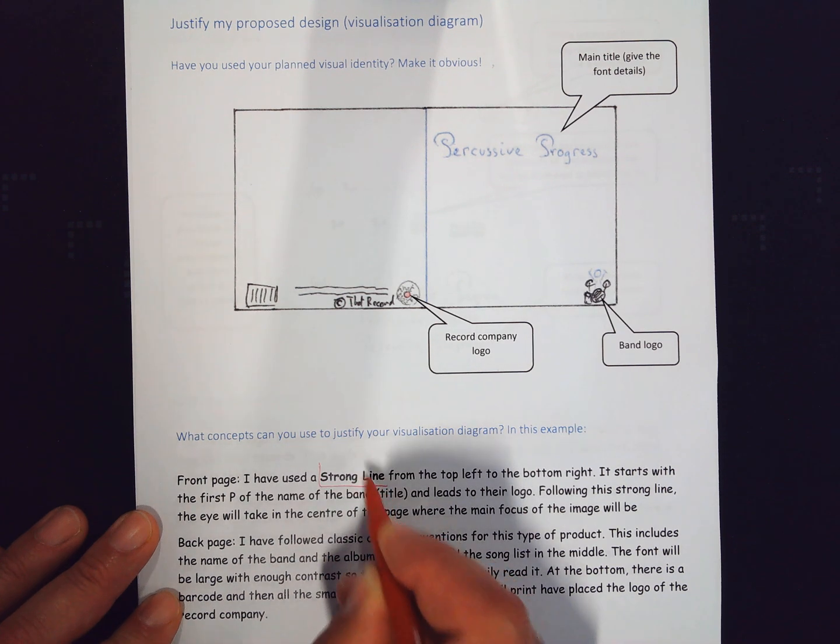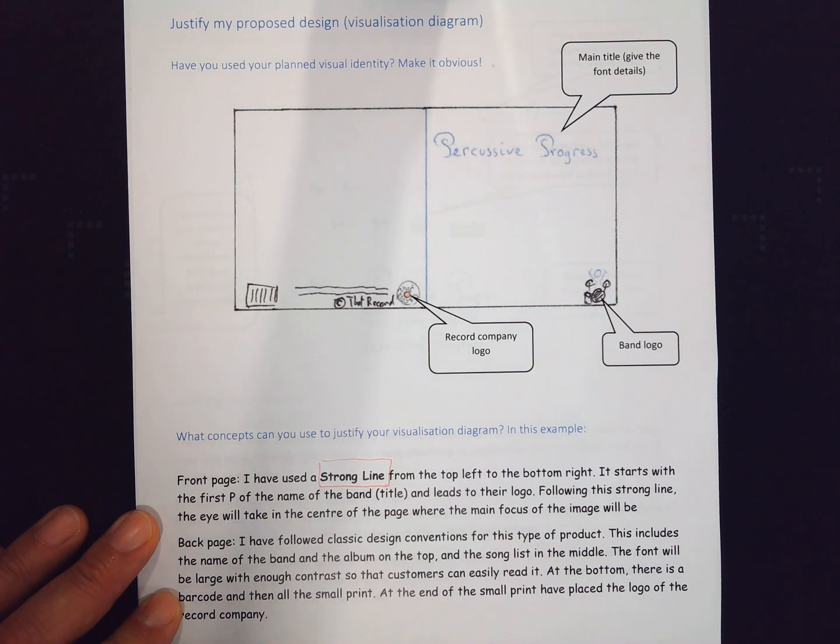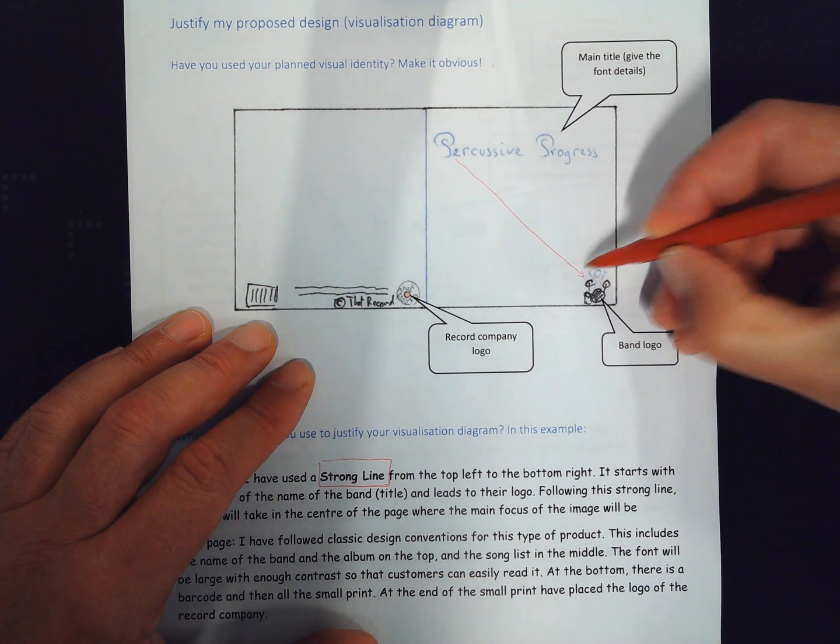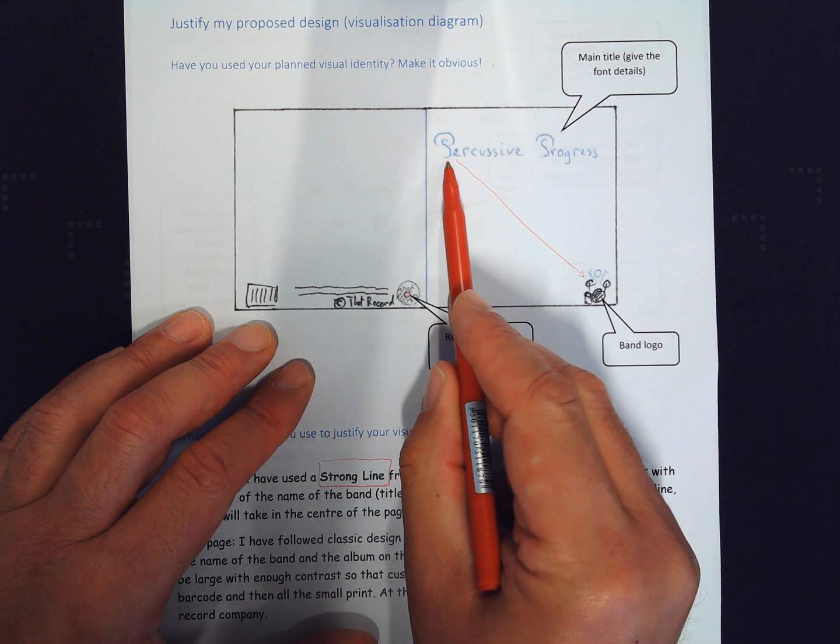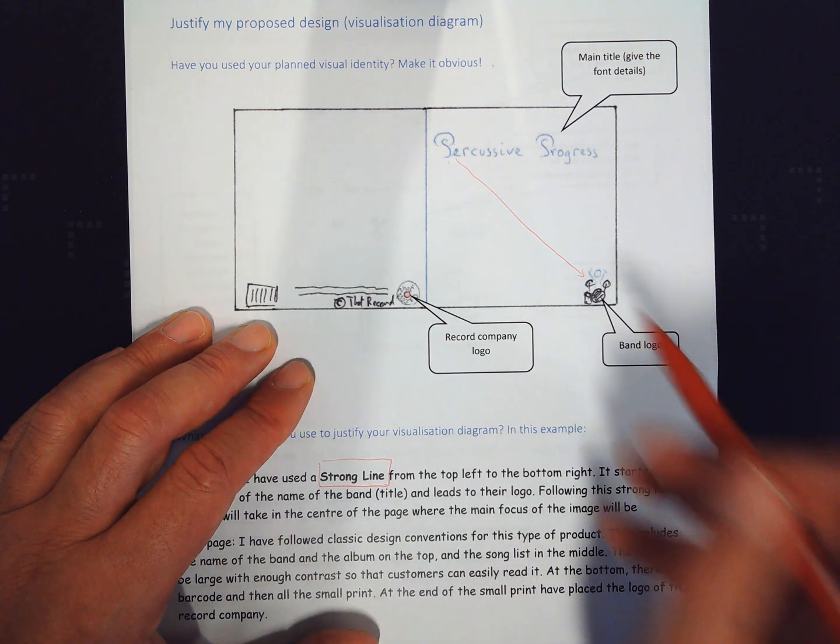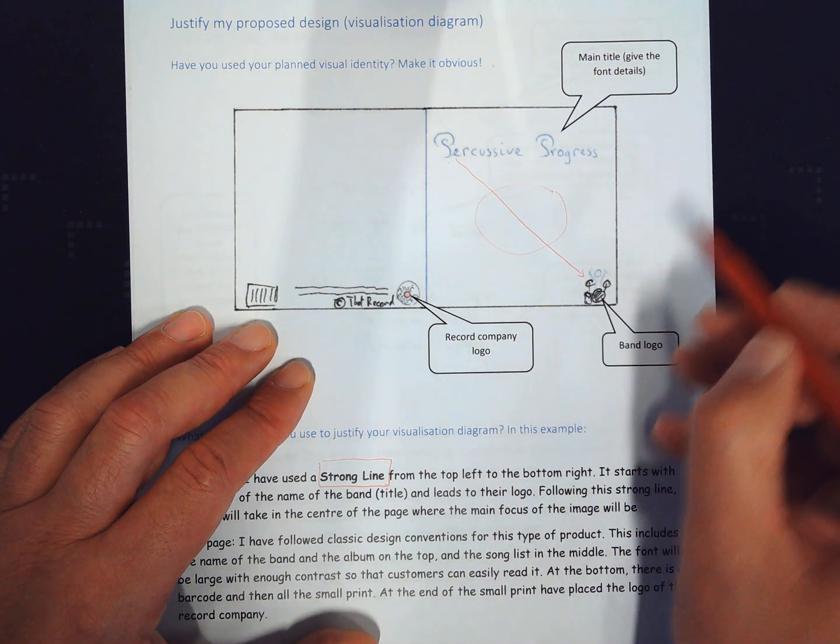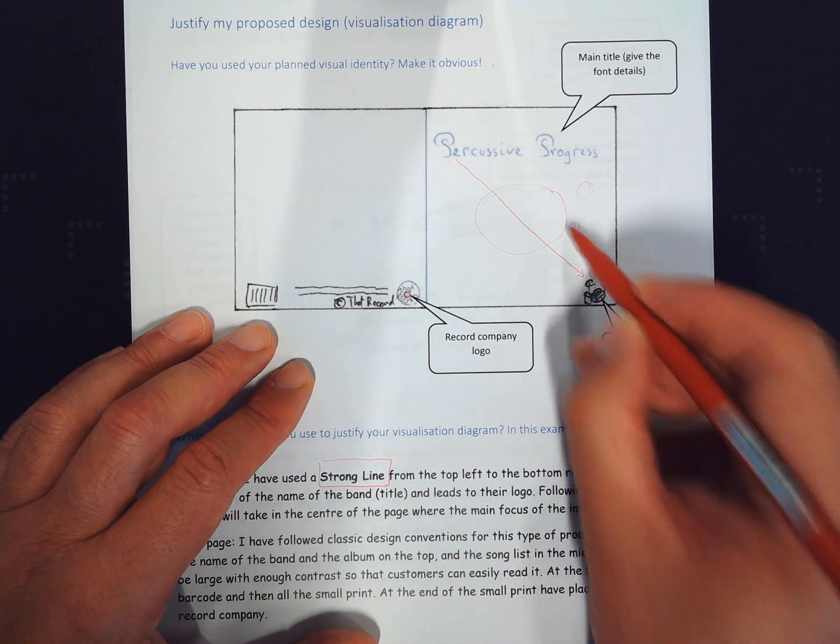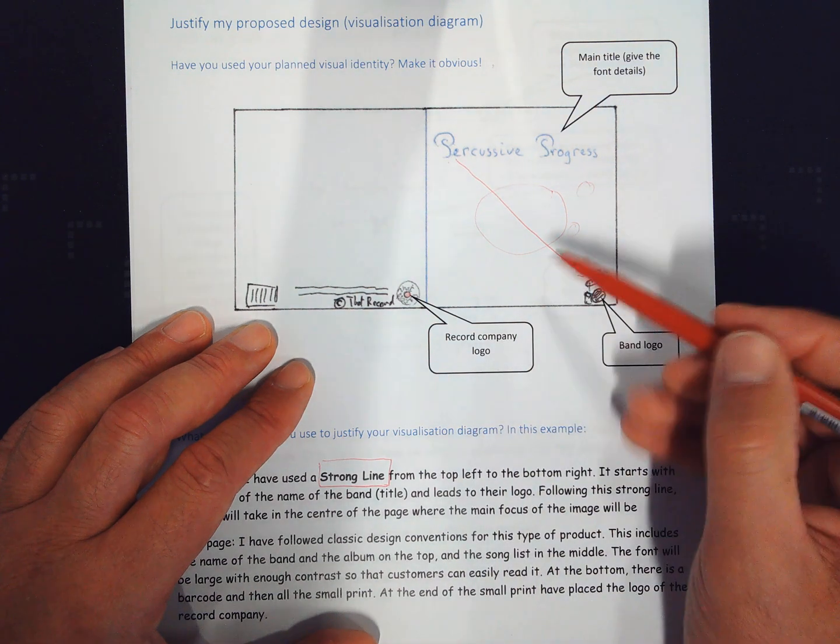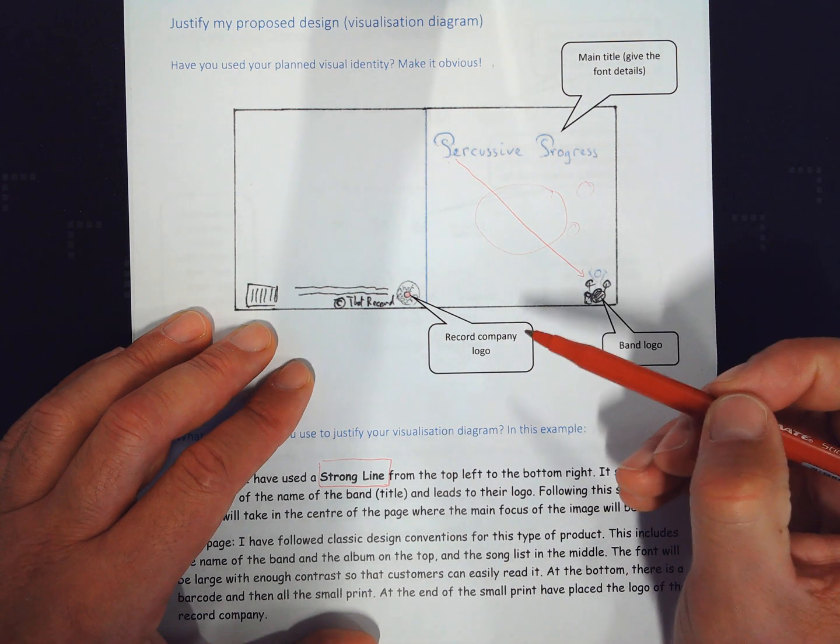Here I've got a strong line for the front page. So I've got a strong line that would go diagonally across and down from the start of the name of the band all the way down to their logo. And in doing so, they are going to take in some key elements of the design that will be in the middle. It's called Fifth Planets from the Left, so it will be a space theme.